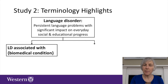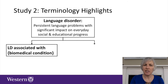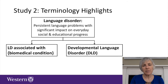That overarching term was separated into two subtypes. One was language disorder associated with a biomedical condition — the biomedical conditions could be something like Autism Spectrum Disorder or Fragile X Syndrome, or some other medically diagnosed condition. It was thought that these children might need more specific approaches in assessment and intervention, so it was best for them to be identified under this category. The second subtype was developmental language disorder — children with a persistent language problem with significant impact on everyday social and educational progress, who didn't have another biomedical condition explaining their language disorder.